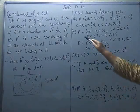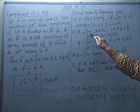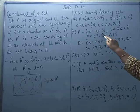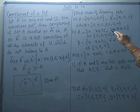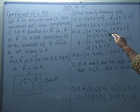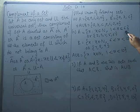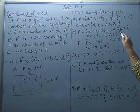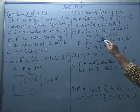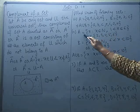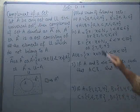The next one is in set builder form. Set A denotes elements X where X is a natural number and it is strictly greater than 1 — meaning X cannot be 1 — and it is less than or equal to 6, so it can be 6 or less. If I write it in roster form, X will take the values 2, 3, 4, 5, 6.